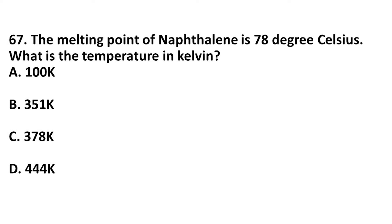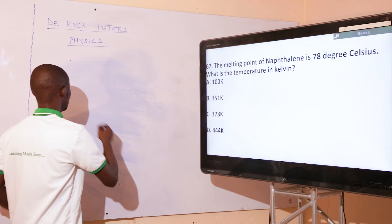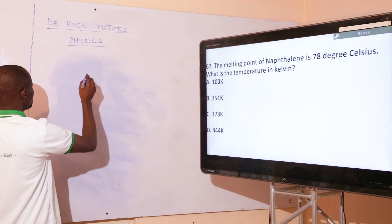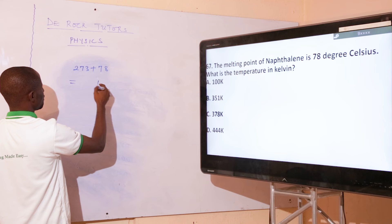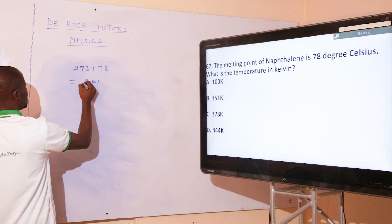The melting point of naphthalene is 78°C. What is the temperature in Kelvin? To convert from Celsius to Kelvin, simply add 273. So 273 + 78 = 351 Kelvin. The correct option is option B.